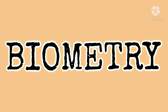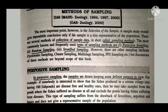Hello friends, today we are going to discuss sampling techniques and methods of sampling. The most important point is the selection of the sample. A sample study would give dependable conclusions only if the sample is a true representative of the population. There are several methods of collecting sample data, commonly called sampling methods. The most commonly known types include purposive sampling, random sampling, and stratified sampling.